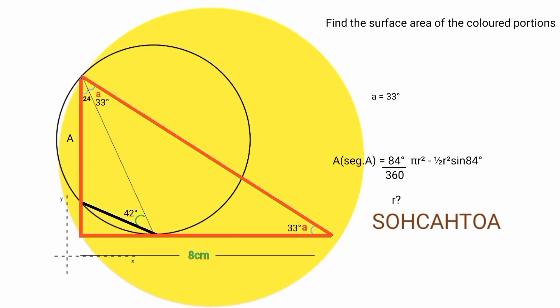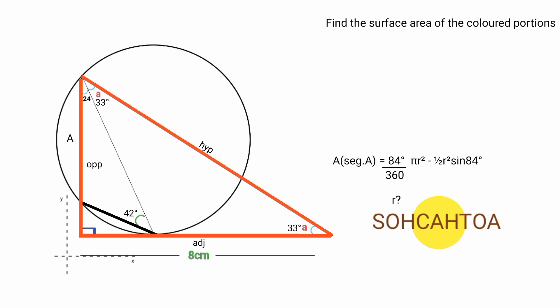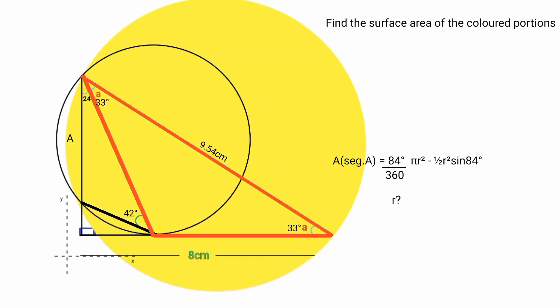From this angle: this is the opposite, this is the adjacent, and this is the hypotenuse because it faces the right angle. Using CAH: cos theta equals adjacent over hypotenuse. Theta is 33 degrees and adjacent is 8 centimeters. So cos 33 degrees equals 8 over hypotenuse, making hypotenuse equal to 8 over cos 33 degrees, which is approximately 9.54 centimeters.